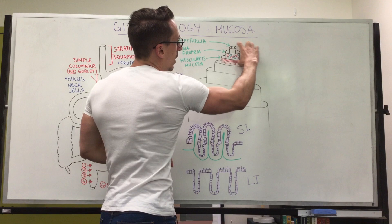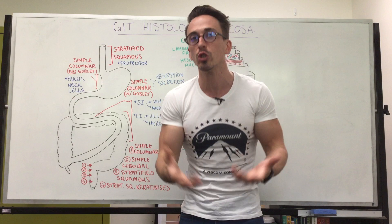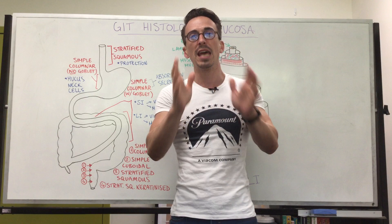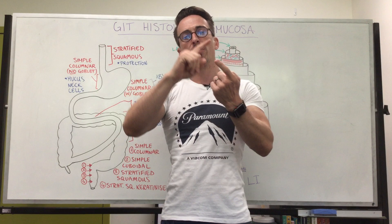These three layers together — the epithelia, lamina propria, and muscularis mucosa — are all termed the mucosal layer of the GIT, the very first and most internal layer. If we look at just the epithelia and start at the esophagus: the esophagus is simply a pipe, a conduit that allows food to move from the mouth to the stomach. It doesn't absorb or secrete anything — it's just there for movement — and therefore the epithelia is stratified squamous, for protection.